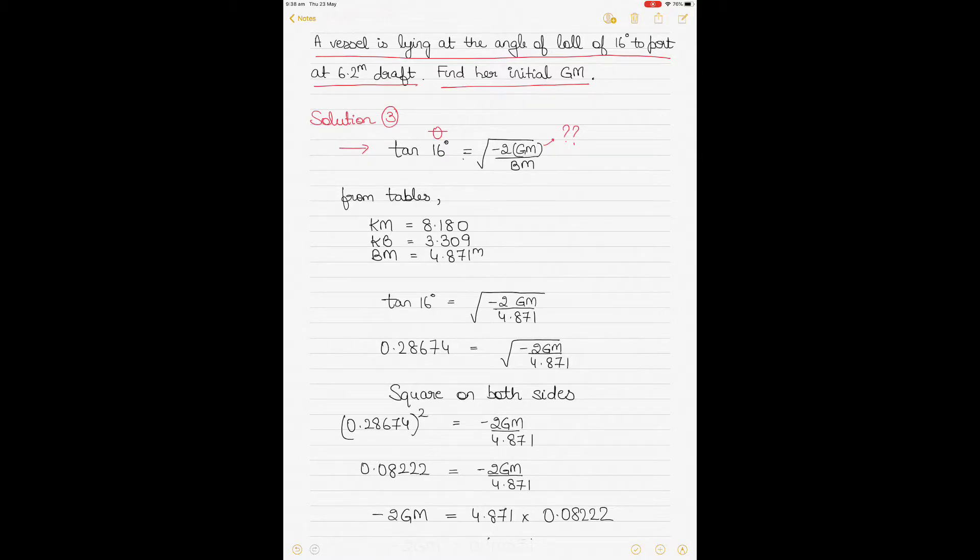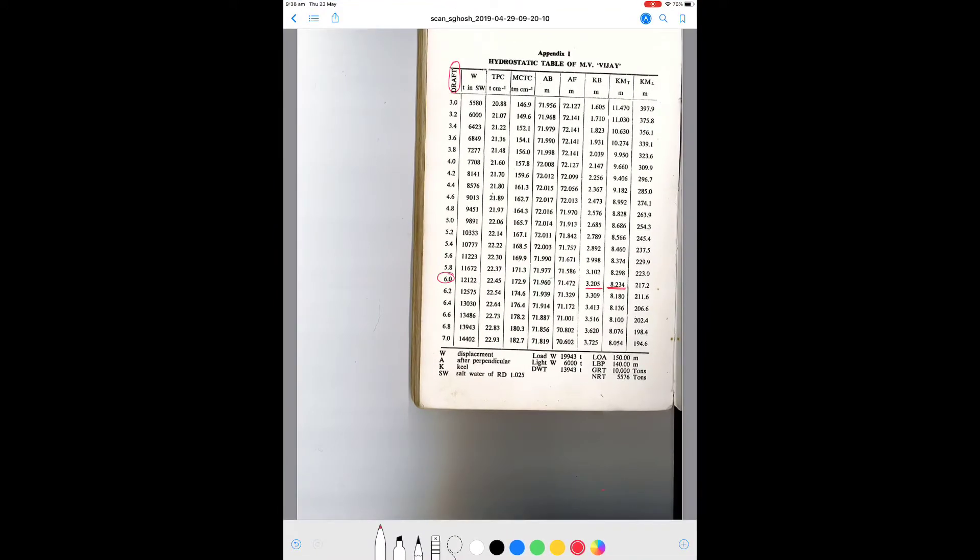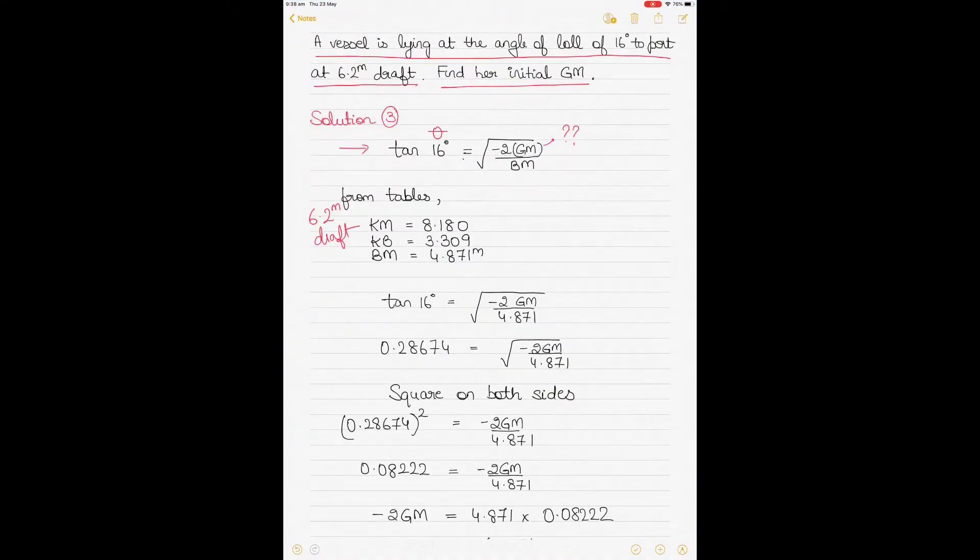So if we have 2 out of 3, we can find out GM. So we'll go into the hydrostatic tables again, this time for a draft of 6.2 meters draft. It's pretty straightforward. You just go and find out the KM and KB. So if I go into the hydrostatic tables for 6.2 this time, for 6.2 meters you can see the draft is here. Just find out the KM and KB values. So KM value is 8.180 and KB is 3.309. So just use these values and go back into the calculation.